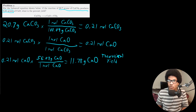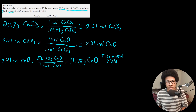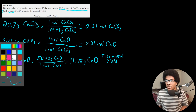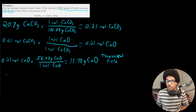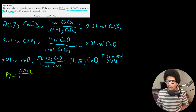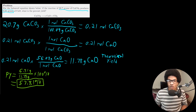Starting with 20.7 grams of calcium carbonate, the maximum amount of calcium oxide that can be produced is 11.78 grams — that's the theoretical yield. The problem tells us the actual yield is 6.81 grams of calcium oxide. So the percent yield is 6.81 grams over 11.78 grams, times 100%, which gives 57.81% — a little over half of what we would expect.